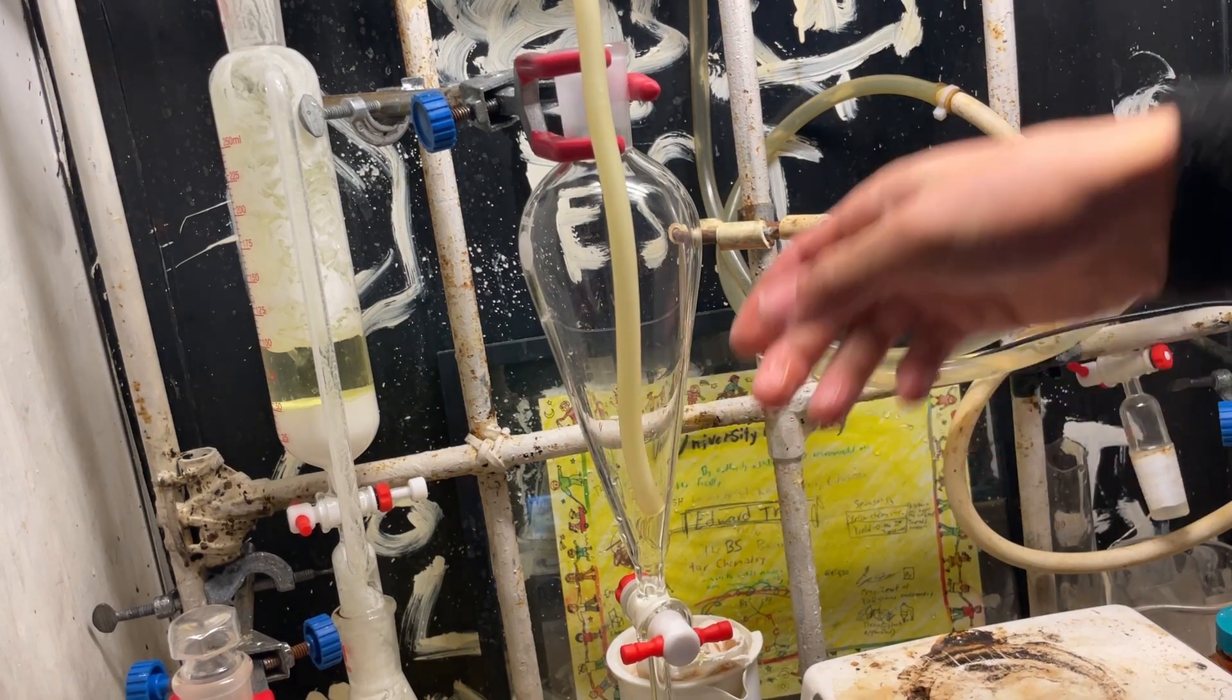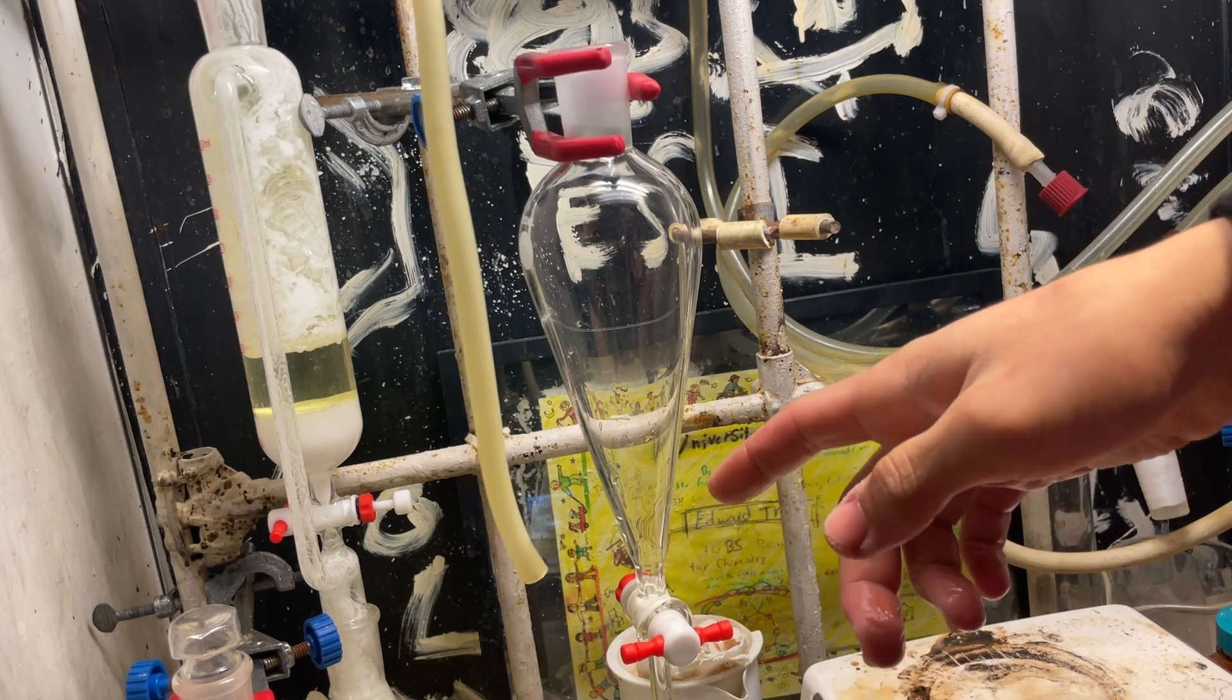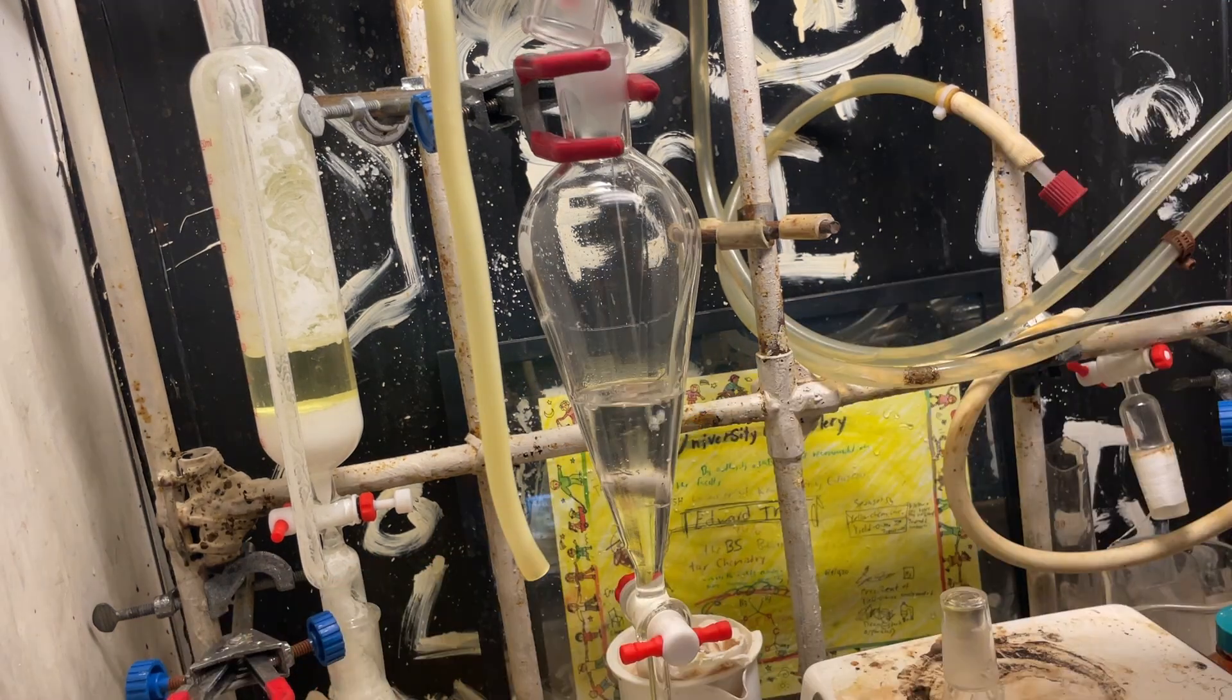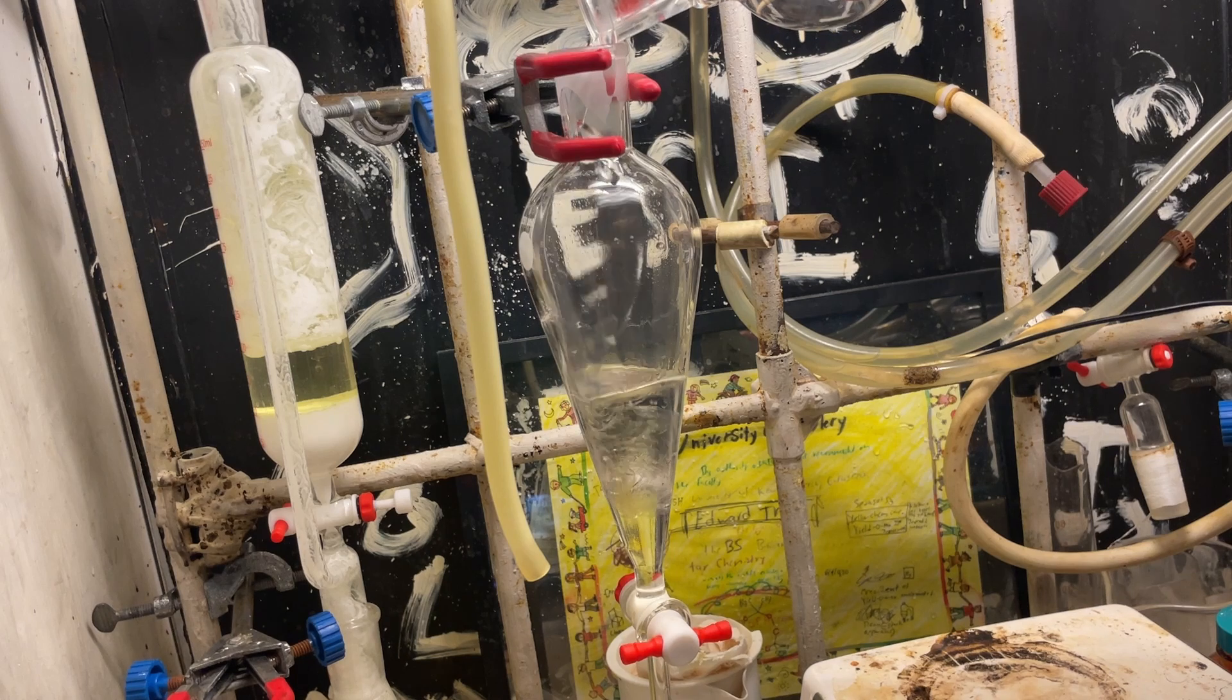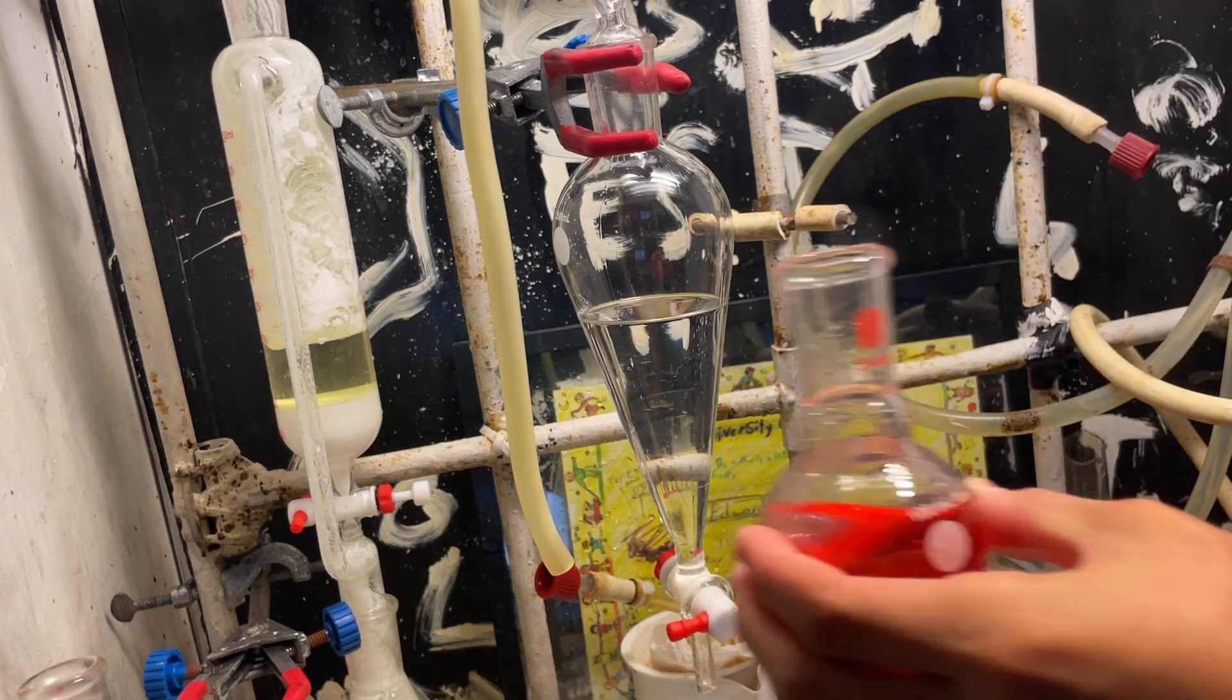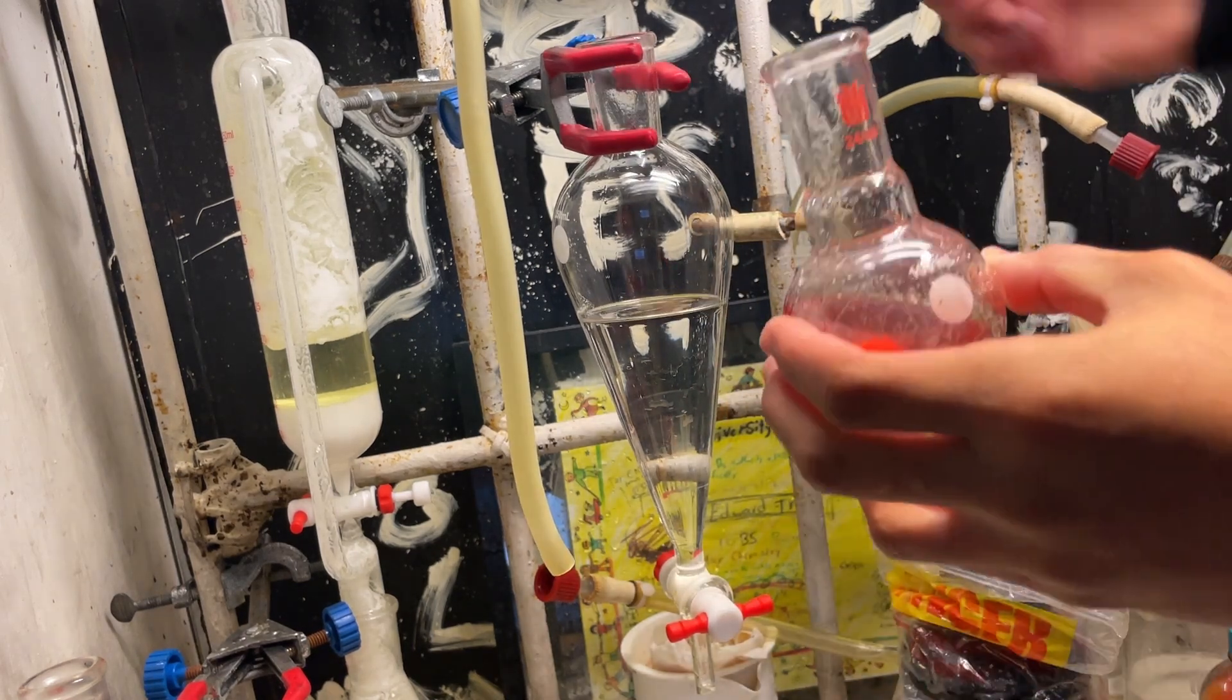Okay, so now we're going to purify out our chloral, so we can combine both fractions, and put them into the sep-funnel with some sulfuric acid. And, so there are 15 milliliters of sulfuric acid right here, and my addition is tears away.